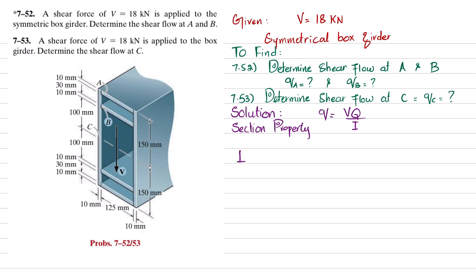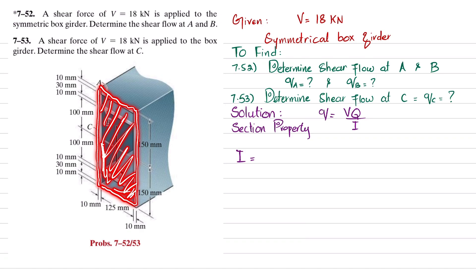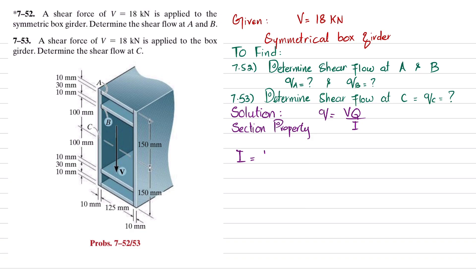To find I, we will take the whole box as a solid girder and find the moment of inertia of that solid girder. Its moment of inertia will be equal to (1/12) × b × h³, where breadth is 145 mm (0.145 m) and height is 300 mm (0.3 m). So the first term is (1/12)(0.145)(0.3)³.